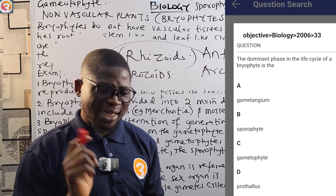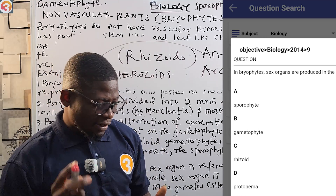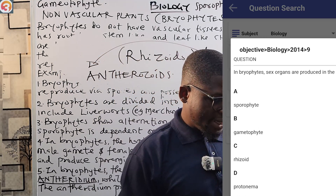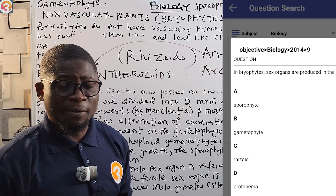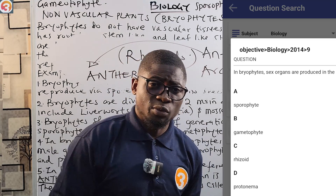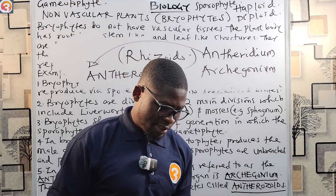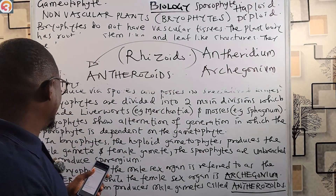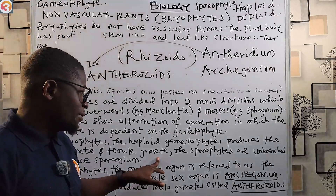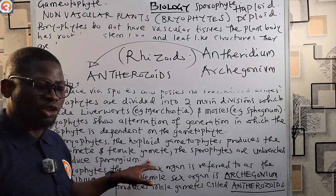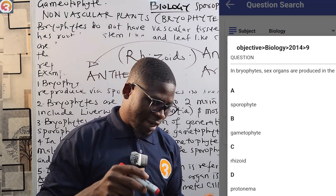We also have a 2014, number 9 question: in bryophytes, sex organs are produced in — option A: sporophyte, B: gametophyte, C: rhizoid, D: protonema. The correct answer is the gametophyte. The sporophyte produces the spores, while the gametophyte produces the gametes — the sex organs, both male and female. In bryophytes, the haploid gametophyte produces the male and female gametes; the sporophytes are unbranched and produce the sporangium. Also note that bryophytes possess root-like structures called rhizoids.